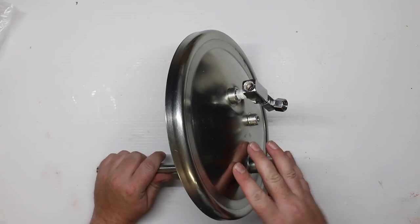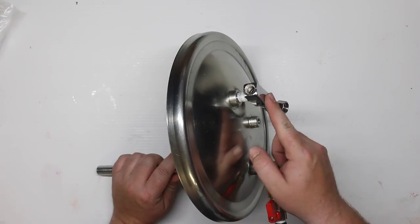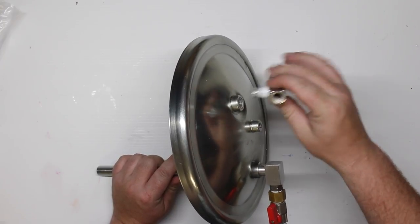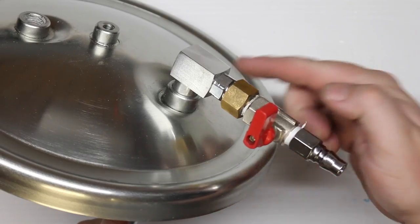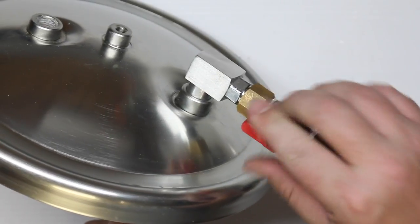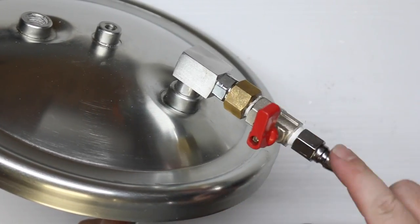To modify this lid for resin casting, it's super easy. Where your regulator screws in, you need to take that out because we no longer need it. And on the paint outlet side, I've added a ball valve so that way when we're adding air, we can open it, and then once it's filled, we can shut it off and take the air off.